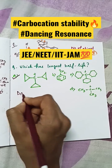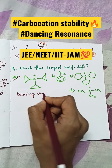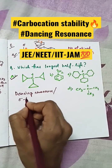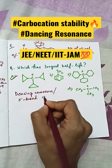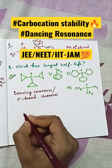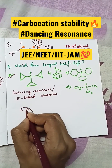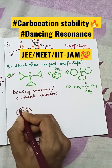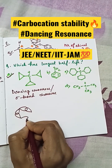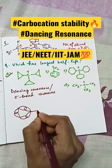...because of dancing resonance, or sigma bond resonance. I have already made a video regarding that. What happens is the cyclopropyl group has a bent bond structure — these carbon-carbon bonds are bent, like this.